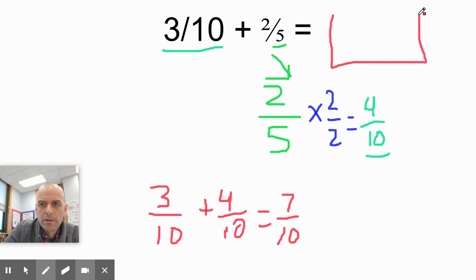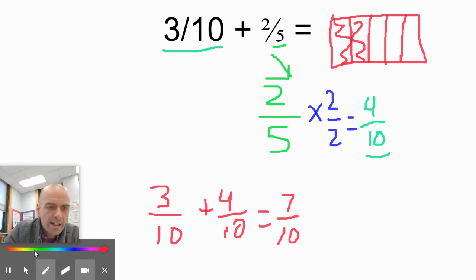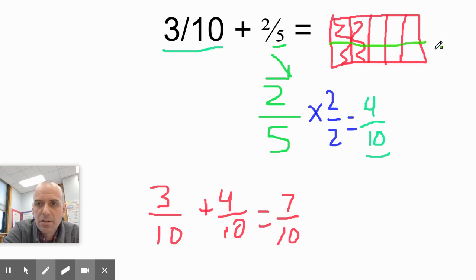So if you had two fifths, right, so one, two, three, four, five, and I colored in fifths, and you turn that into tenths, watch what you're doing. You're splitting both the numerator and the denominator into two new pieces, right? So you're taking the two fifths and splitting it into two new spots. So that's what the math is showing. It's saying two fifths split into two new pieces makes four tenths. So this is this. It's just one's a picture version, one's a multiplication version.